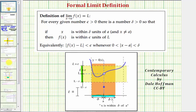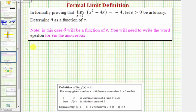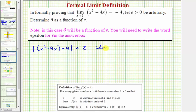Going back to our problem, we would have the absolute value of f of x minus L less than epsilon, which would be the absolute value of the quantity x squared minus four x, and then minus L, which we know is negative four. So we have minus negative four, which becomes plus four, and this must be less than epsilon whenever the absolute value of x minus a — which would be the absolute value of x minus two — is less than delta and greater than zero.